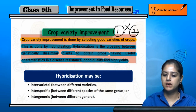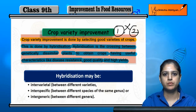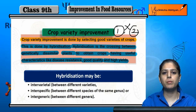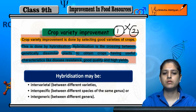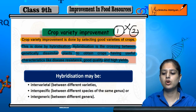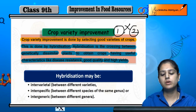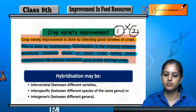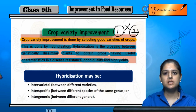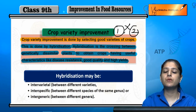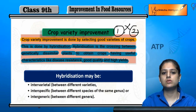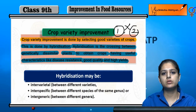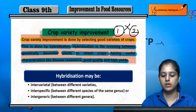We take crop 1 and crop 2 and crossbreed them to obtain a new crop. The result is a better crop with useful characteristics: diseases are reduced, quality is good, and yields are high.